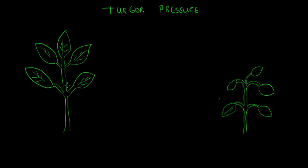Turgor pressure. Turgor pressure is a process that plants use that utilizes the cell structure and the process of osmosis and the movement of water to keep a plant tall and upright and healthy like this plant right here.